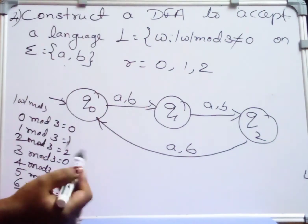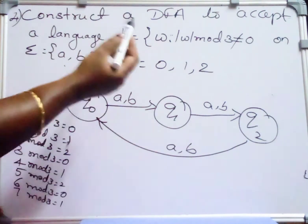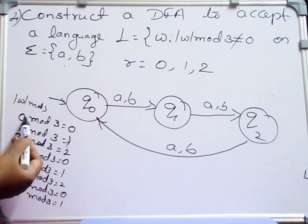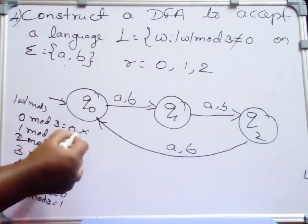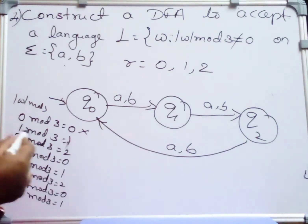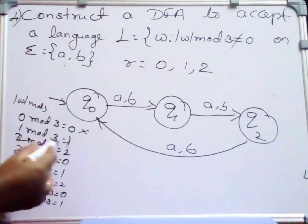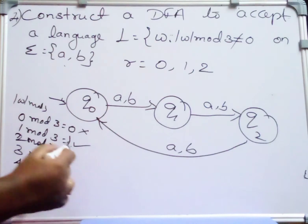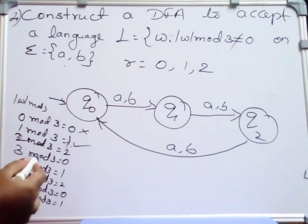Then what kind of strings it should accept? Here it is W mod 3 equal to 0, so this string should be rejected. Here 1 mod 3, 1 mod 3 is equal to 1, it is not equal to 0, so this string has to be accepted.